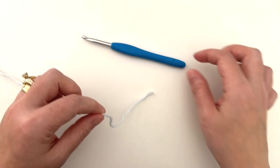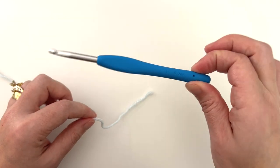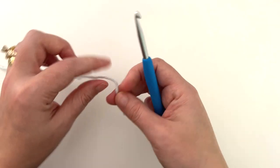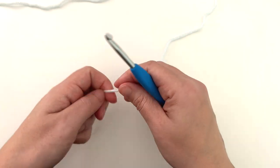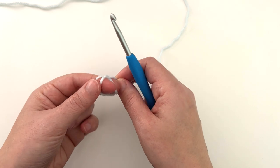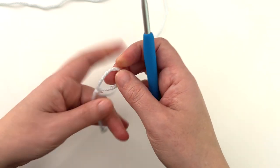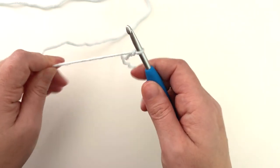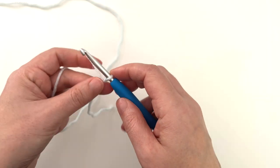So grab your yarn and a hook and let's get started. I'm working with worsted weight yarn and an H hook, but as always you can use whatever you have on hand. And like I said earlier, there's a lot of different ways to set up and work the basket weave stitch and this is just one of my favorites. I always like to say that there's no such thing as the way, only a way.